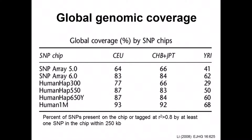Different arrays cover portions of the genome at different levels. The proportion of common variants across the genome well-represented by a SNP on the array can differ by the populations being analyzed. Depending on the amount of variation in a population, one array may do a better job than another at capturing that information, so when deciding which array to use, you should consider how well it is likely to perform based on the ancestry of those individuals.